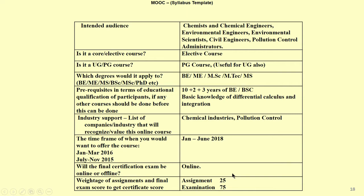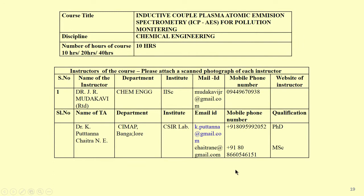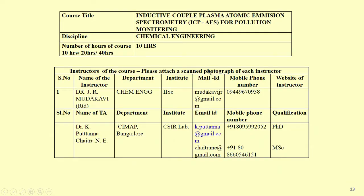The weightage of assignments is around 25 percent and the examination will be about 75 percent. The course title for confirmation is inductively coupled plasma atomic emission spectrometry for pollution control and pollution monitoring. The basic discipline is chemical engineering, but it is also for chemists. The number of hours is approximately 10 hours — about 20 sessions of half an hour each.